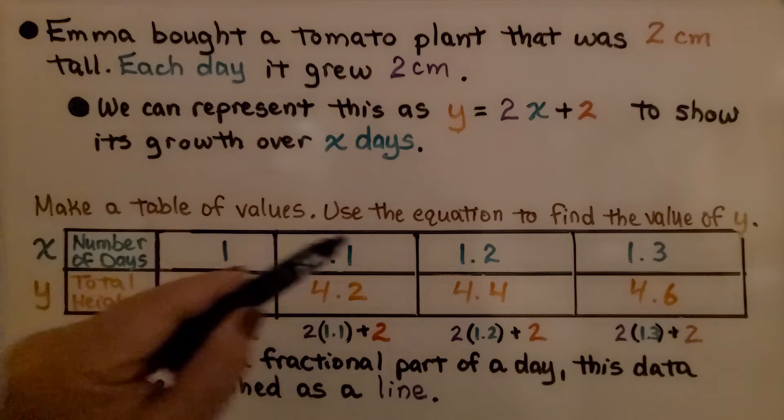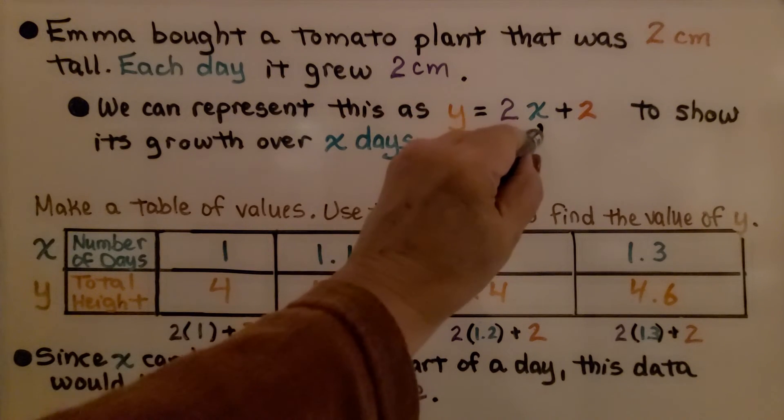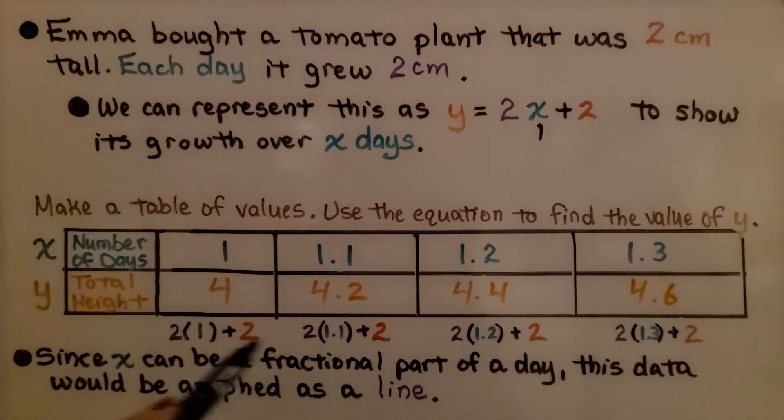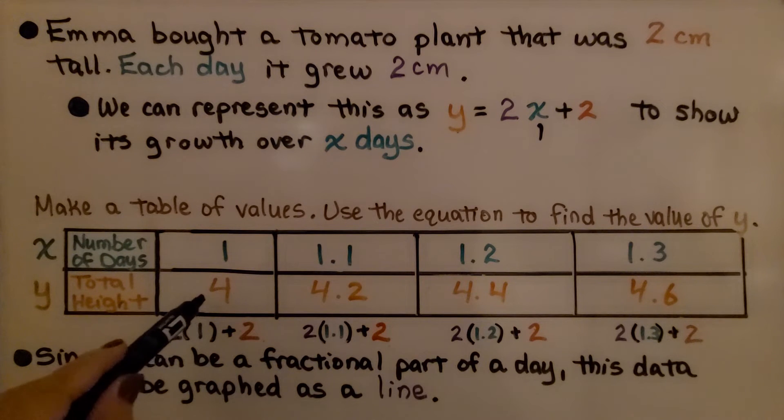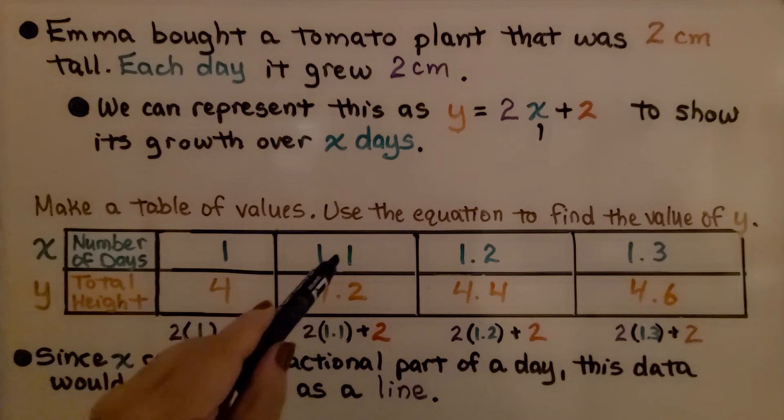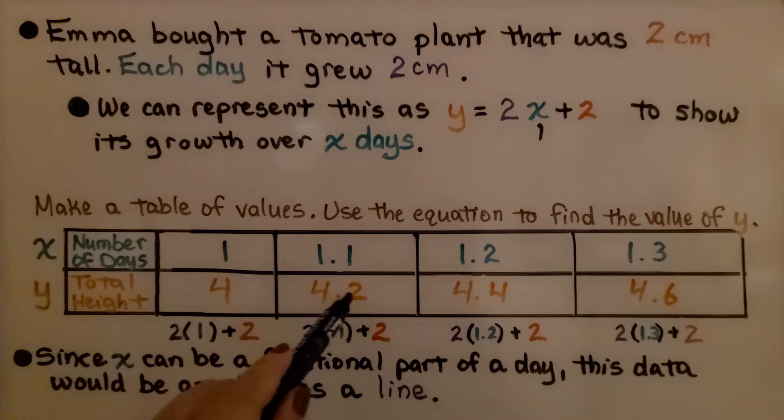If x is 1, then we've got 2 times 1, which is 2, plus 2. Our y value is 4. And if it's 1.1 days, well then its growth is 4.2 in height, 4.2 centimeters.